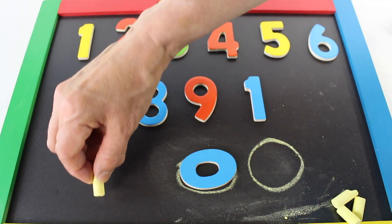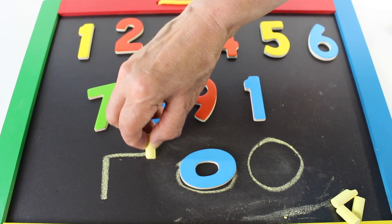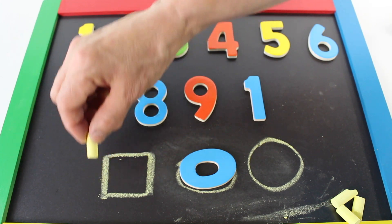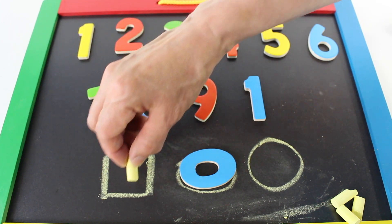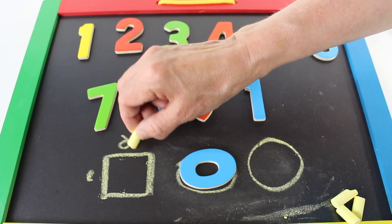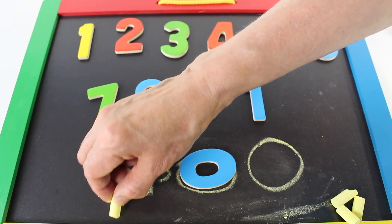Here is a square. One, two, three, four. Four equal sides. One, two, three, four.